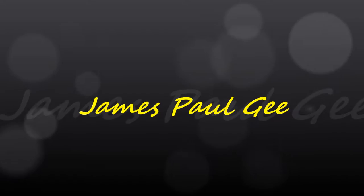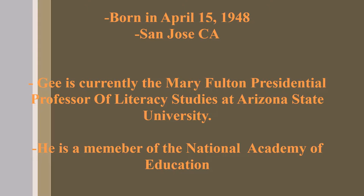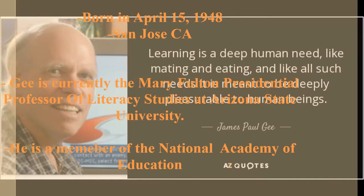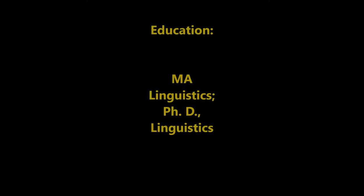James Paul Gee is an American researcher who has worked in psycholinguistics, bilingual education, and literacy. He was born on April 15, 1948, and is currently a professor at Arizona State University. He is also a member of the National Academy of Education. He has an MA and a PhD in linguistics, and attended both University of California at Santa Barbara and Stanford University.